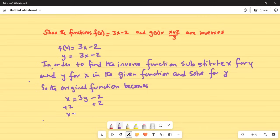So I get x + 2 = 3y. Now I have to solve for y, so I'll divide by 3 on both sides.